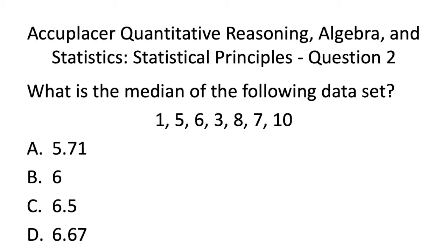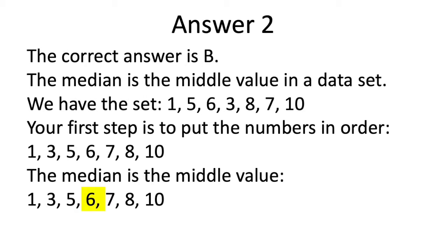Here is Acuplacer QAS Statistics Practice Test Question 2. The correct answer is B. The median is the middle value in a data set. Here we have the set 1, 5, 6, 3, 8, 7, and 10. Your first step is to put the numbers in order as shown here. The median is the middle value, which is 6 in our set. As you can see, we have 3 numbers lower than this and 3 numbers higher than this, so 6 is exactly in the middle.